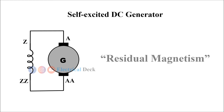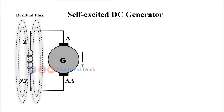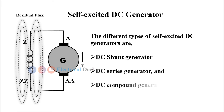The answer is residual magnetism by the field poles. When a generator is started, the field poles possess some residual flux. This flux develops a small EMF in the armature, which in turn drives a small current through the field winding. This further increases the amount of induced EMF in the armature. This process continues till the generator develops the rated voltage at the armature. The different types of self-excited DC generators are DC shunt generator, DC series generator, and DC compound generator.